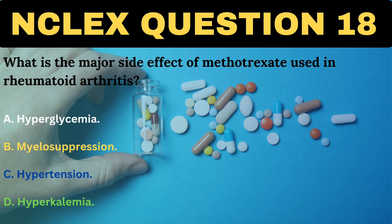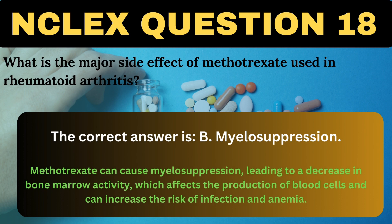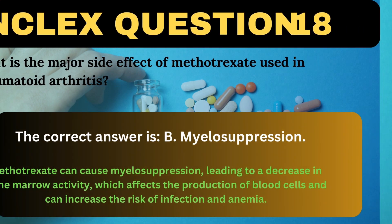What is a significant side effect of methotrexate? A. Hyperglycemia. B. Myelosuppression. C. Hypertension. D. Hyperkalemia. The correct answer is B, Myelosuppression. Methotrexate can cause myelosuppression, leading to a decrease in bone marrow activity, which affects the production of blood cells and can increase the risk of infection and anemia.